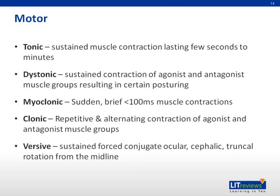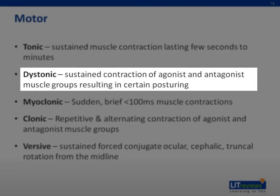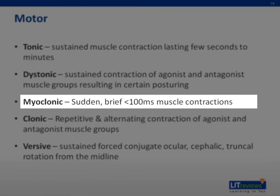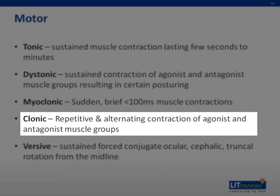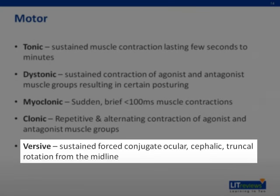Motor seizures are described by the actions produced. Tonic seizures are sustained muscle contractions lasting seconds to minutes, involving contractions of agonist and antagonist muscle groups resulting in abnormal posturing. Myoclonic seizures are sudden brief muscle contractions. Clonic seizures are repetitive alternate contractions of agonist and antagonist muscle pairs, often resulting in involuntary repetitive movements. Versive seizures affect axial muscles resulting in sustained rotation from the midline, affecting cephalic and truncal muscles. When it affects the eye muscles, it causes conjugate eye deviation.